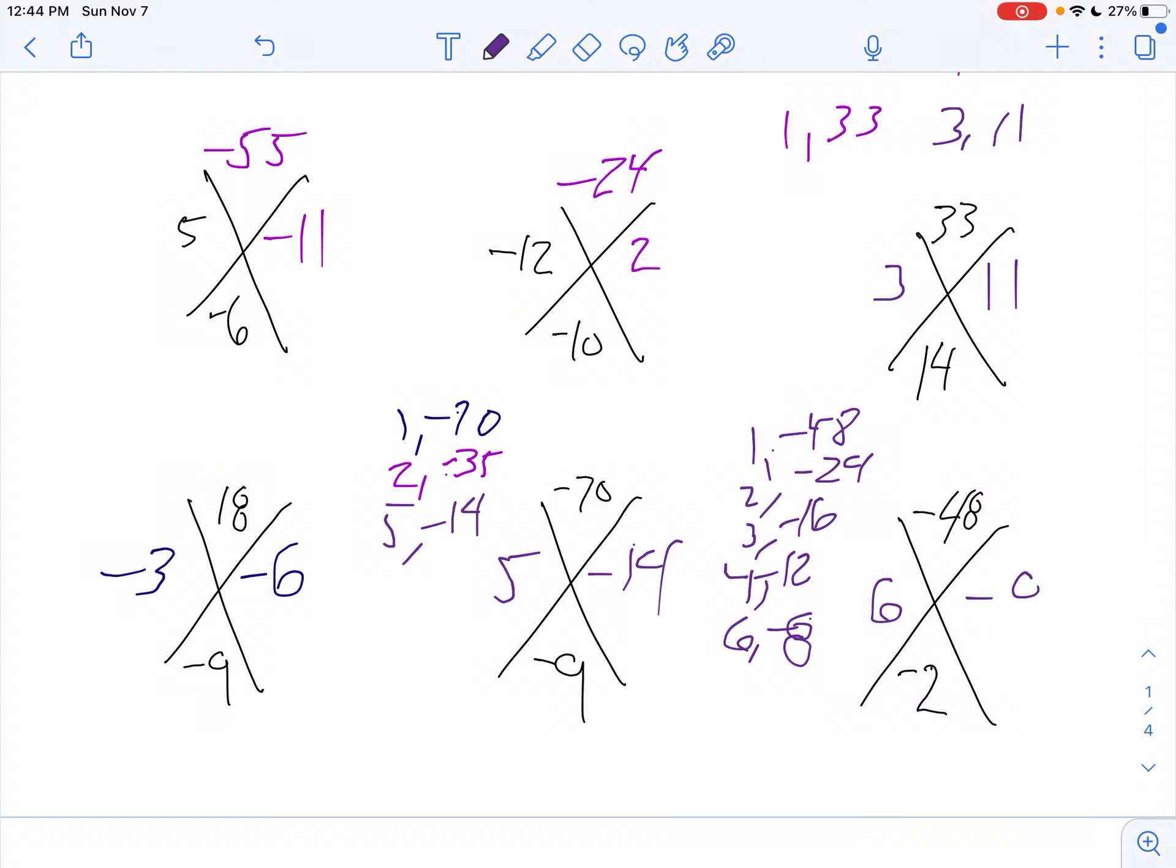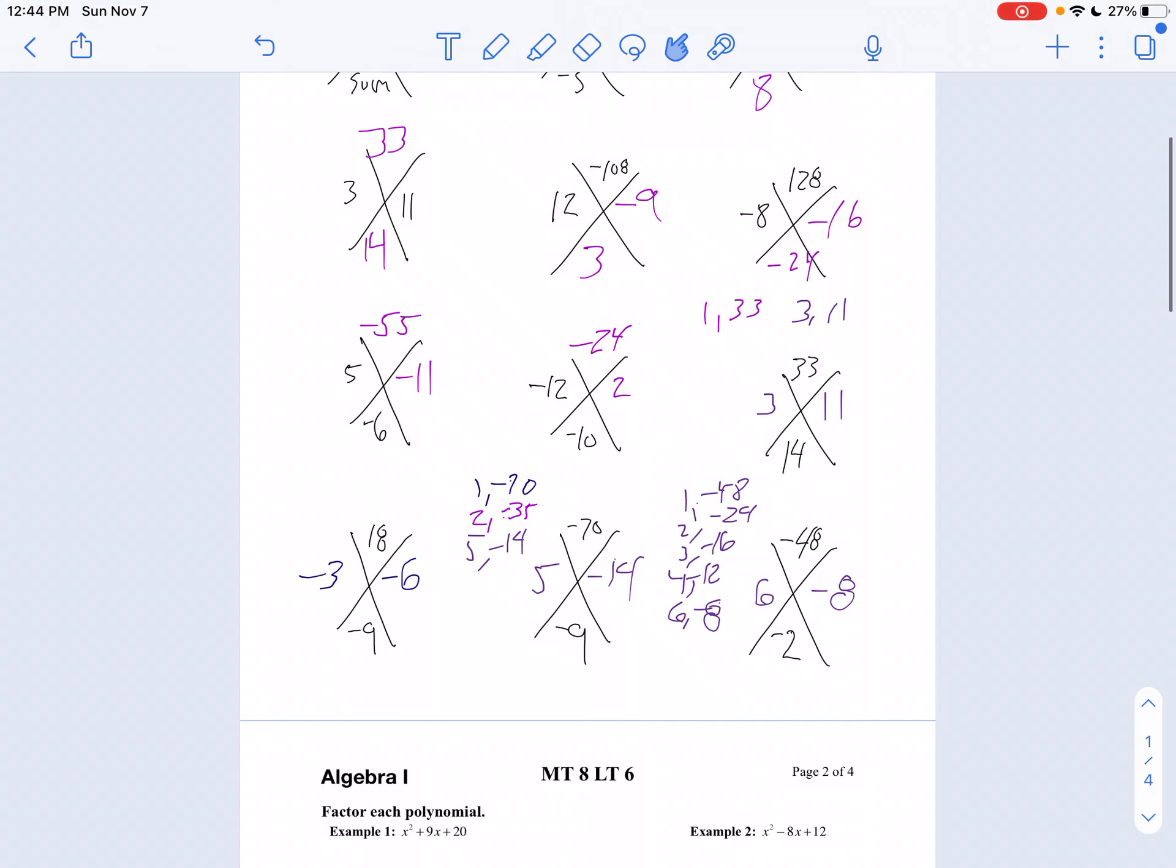So, I'll go 6 and negative 8. Did you happen to notice that in the second row, in the first column, and the third row, the last column, those were actually the same problem? I just gave you some different given information.